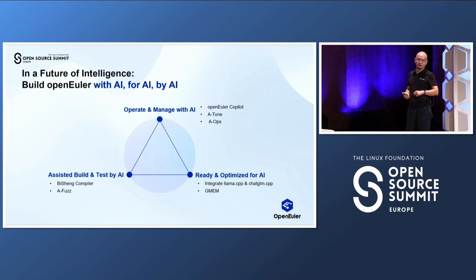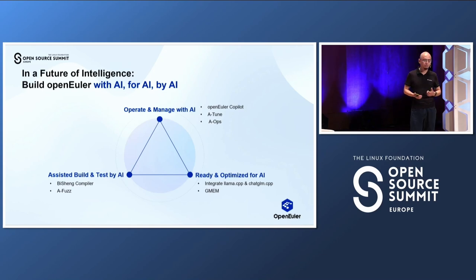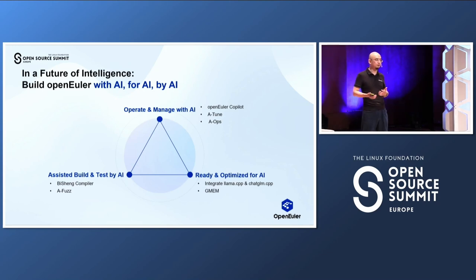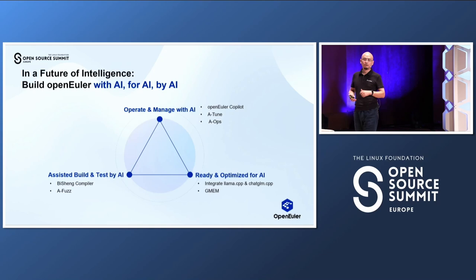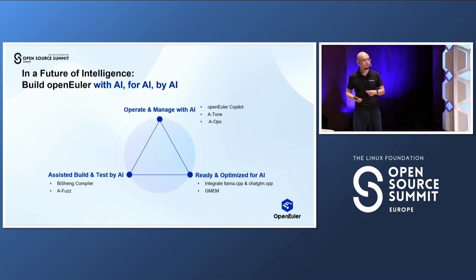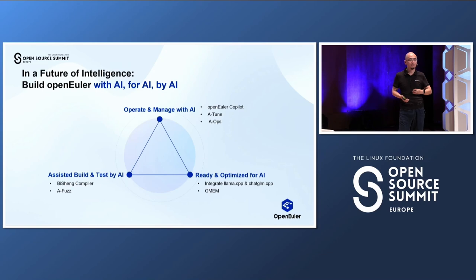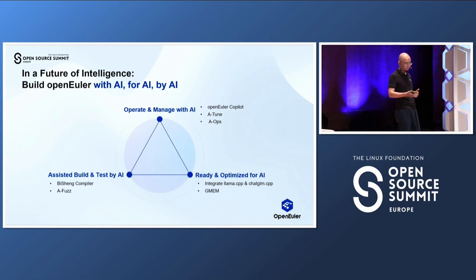openEuler is also ready and optimized for AI. We're going to integrate LLaMA and ChatGLM into the release of the community distribution. We will also try out-of-tree features like GMEM integrated into openEuler to make AI applications run better. openEuler is also assisted in build and test by AI. For example, on the compiler side, the BiSheng compiler is an LLVM-based compiler trying to replace heuristic algorithms with AI models to provide smaller and faster binaries for openEuler. We also leverage AI for fast testing, using LLM models to generate testing cases, which helps achieve better software quality — and these testing results feed back to the upstream community to benefit a wider audience.